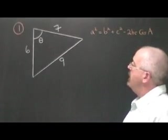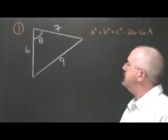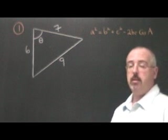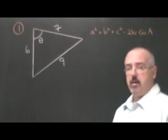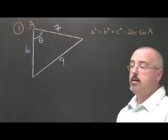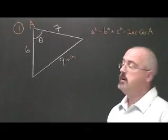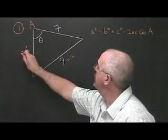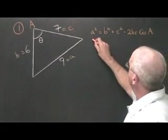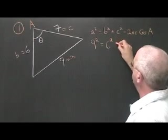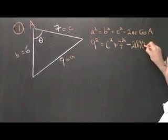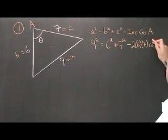In example 1, we have a triangle that is not right, with sides of 6, 7, and 9 units in length, and we'd like to know the measure of angle theta. Since A is always the unknown when we use cosine law, we call angle theta A, which means the 9 is side a. It doesn't matter which of the other two sides we call B or C. Now we fill in our formula: 9 squared equals 6 squared plus 7 squared minus 2 times 6 times 7, cos A.